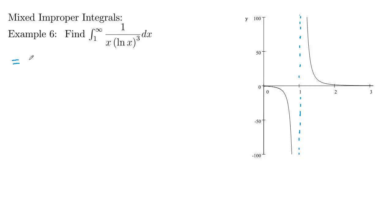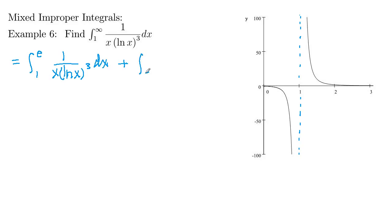We want to integrate from 1 to some number. I'm going to use e because the natural log of e is 1. So we split it as: the integral from 1 to e of 1 over x ln(x) cubed dx, plus the integral from e to infinity of 1 over x ln(x) cubed dx. Since e is about 2.71, our first piece includes the infinite vertical strip and the second piece includes the infinite horizontal strip.